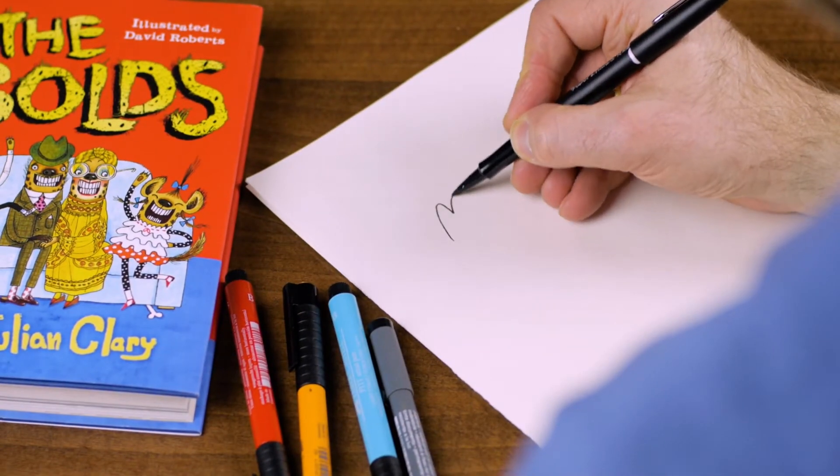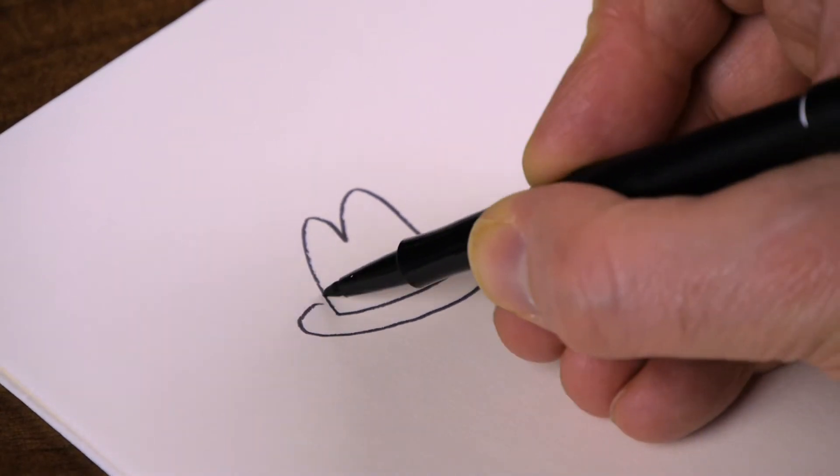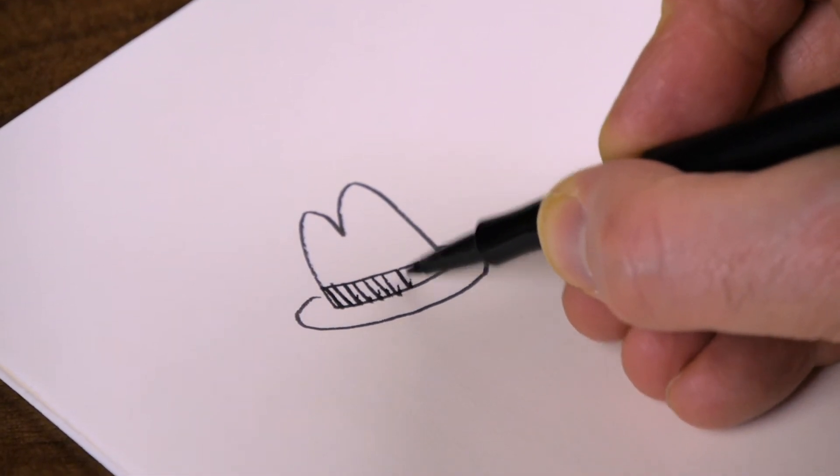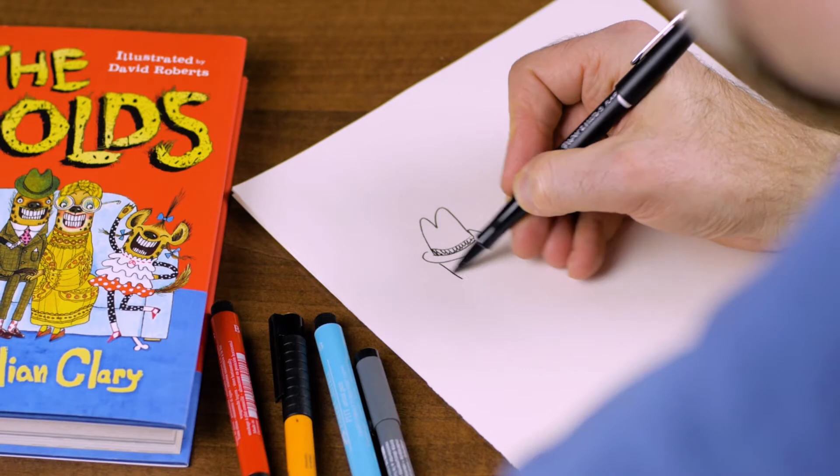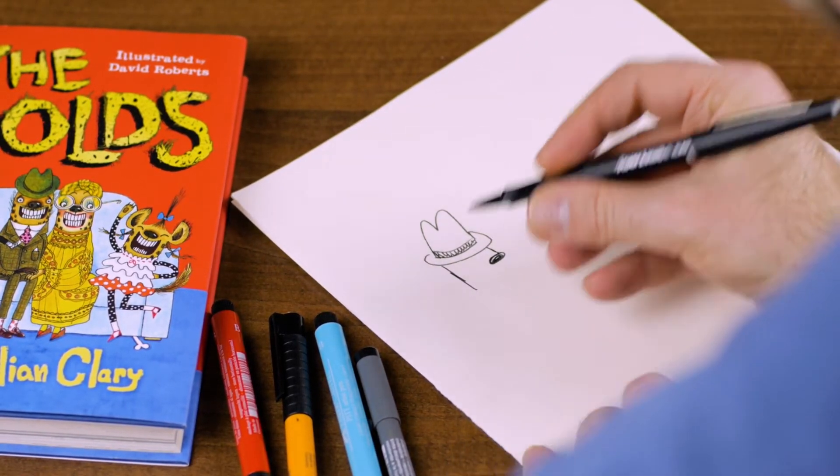So I will start with Mr. Bold's hat. He wears a trilby hat like this. And then I'll put in the sides of his face. This is his nice little nose.